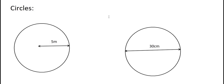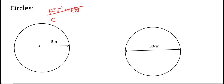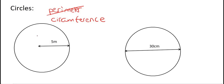However, in a circle we don't call it the perimeter — we cross that out and rather call it circumference. Circumference is the name for perimeter when we use a circle. When we talk about the circumference of a circle, it's the distance going all the way around on the outside.